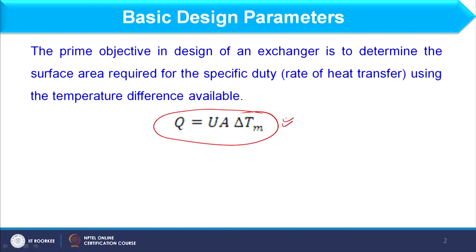Is there any other equation for heat transfer? Yes — we also relate Q = m·Cp·ΔT. Q is the heat duty, meaning the capacity to transfer heat from one fluid to another. That should be in balance: the m·Cp·ΔT of one fluid should equal m·Cp·ΔT of the other fluid. So, we have two basic equations: Q = m·Cp·ΔT and Q = U·A·ΔTm.